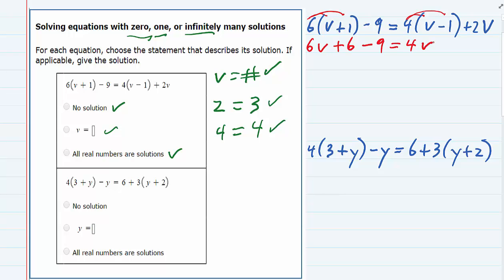four times minus one is minus four, and bring down the two v. So we've gotten rid of the parentheses.